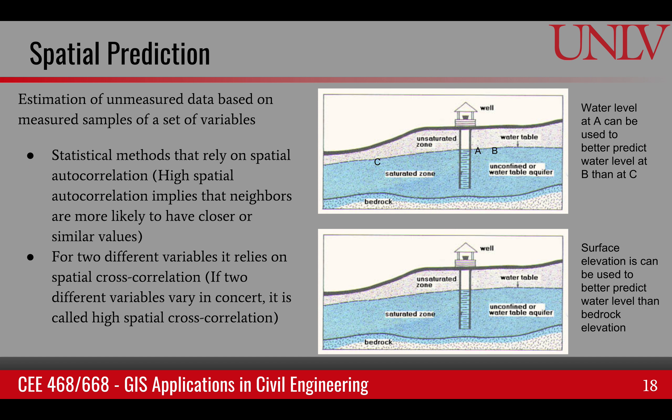Spatial prediction is estimation of unmeasured data based upon measured samples of a set of variables. As we mentioned earlier, this can involve more than one variable as predictors. So here's an example.